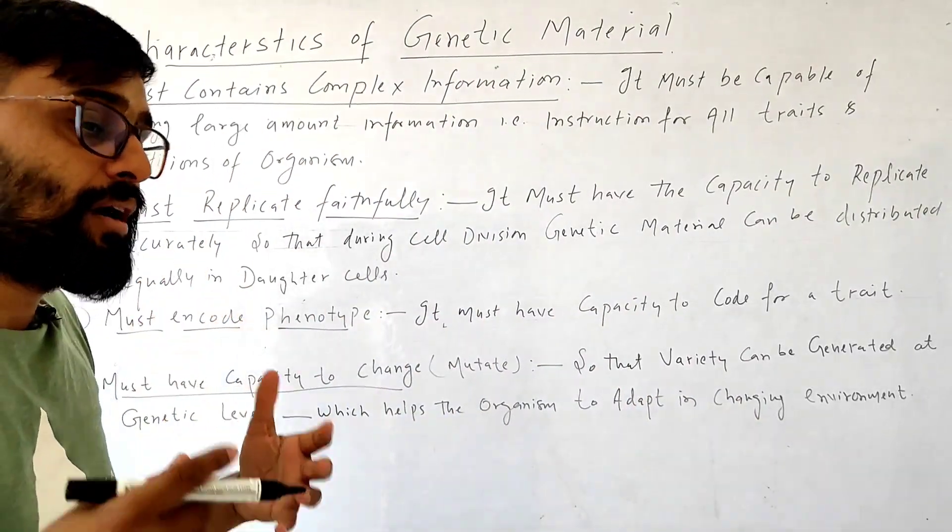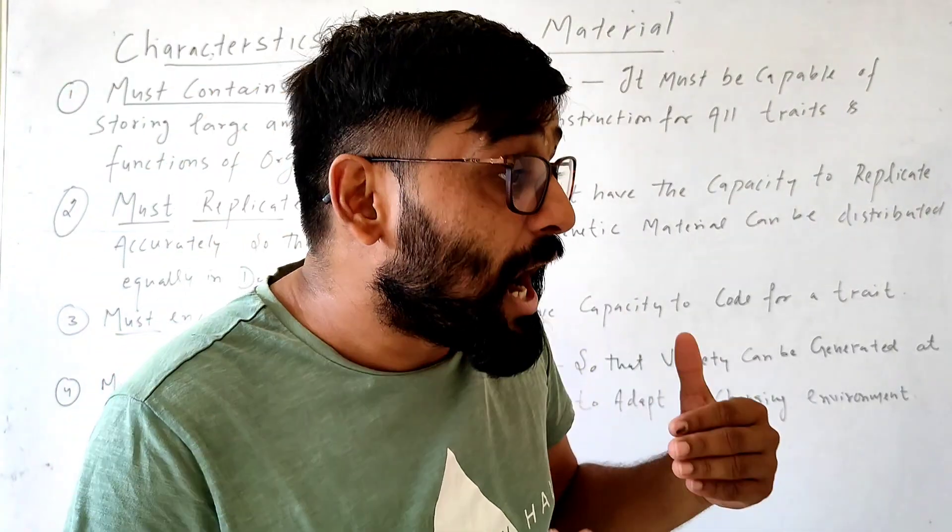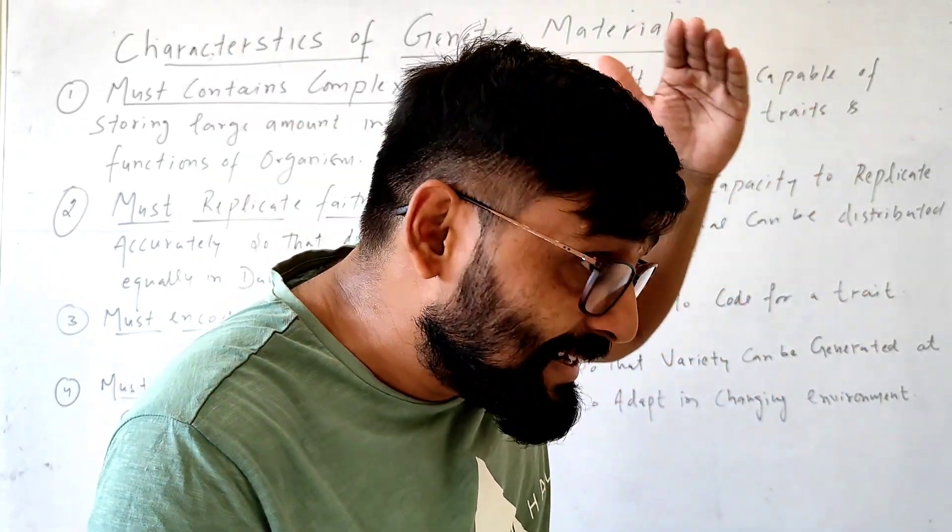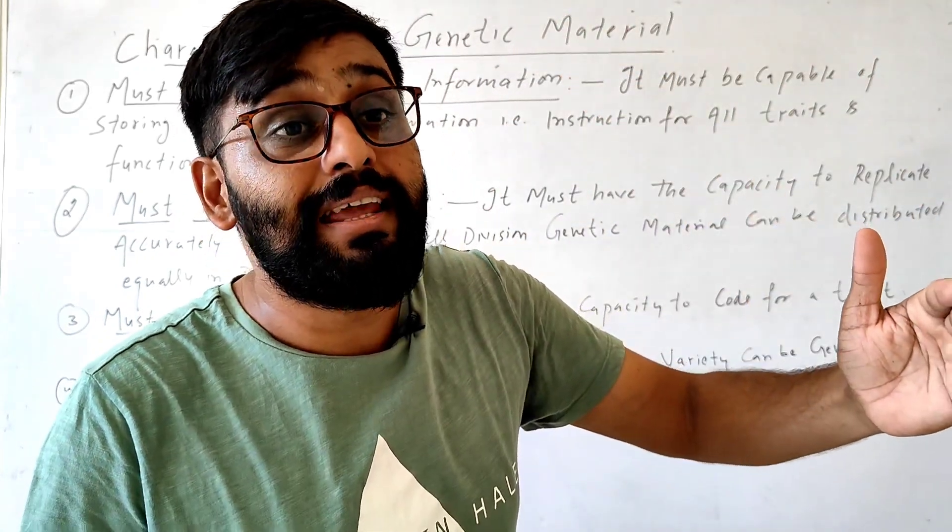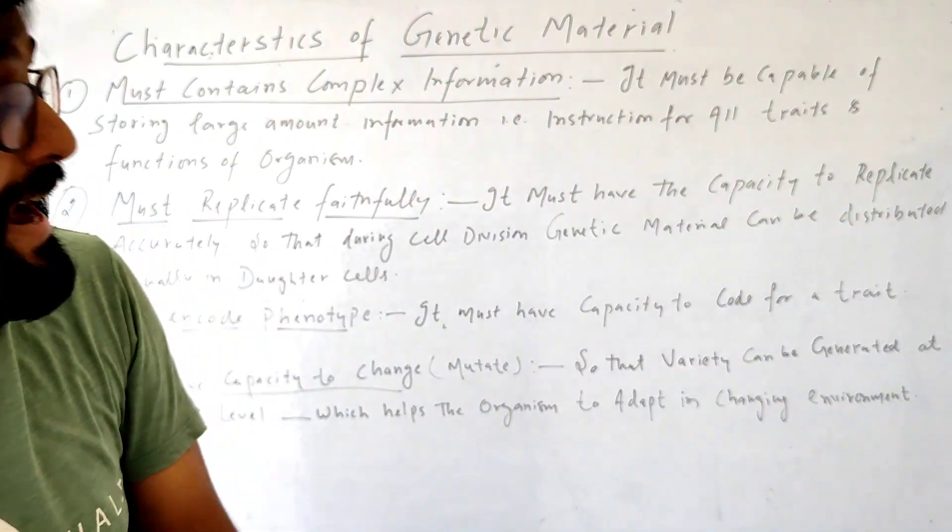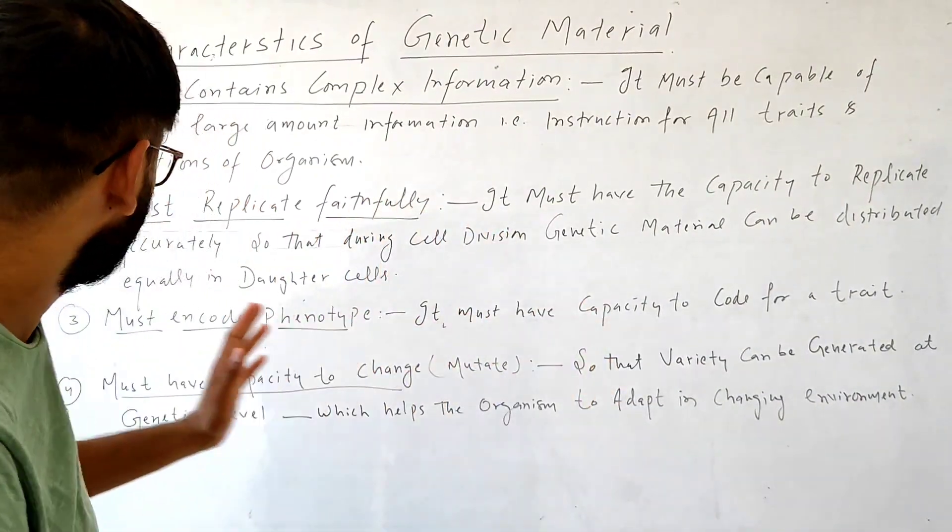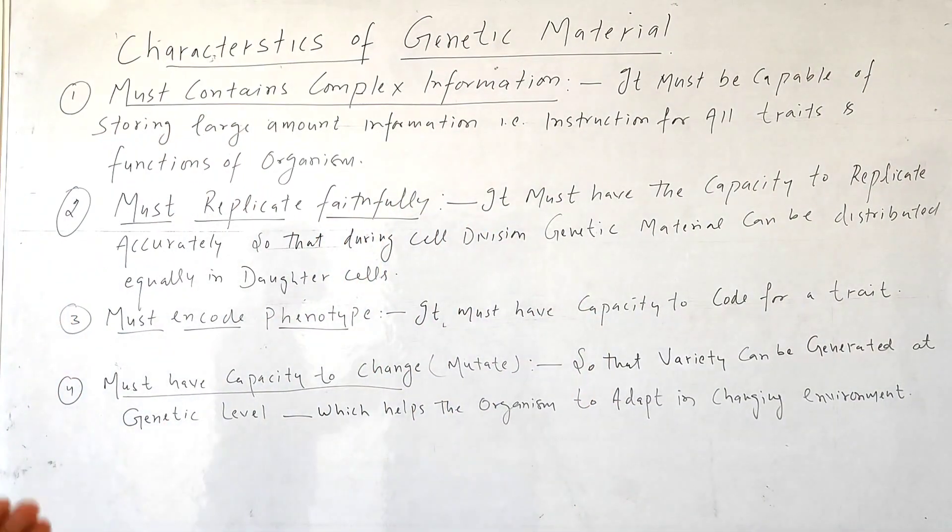And genetic material, you know that our genetic material is DNA. How does DNA code for a trait? DNA codes for RNA, then RNA forms protein, and this protein causes a trait. So third is must encode a phenotype.